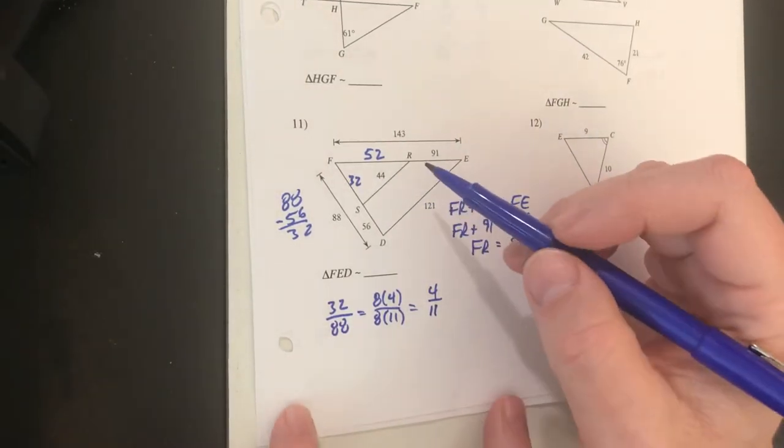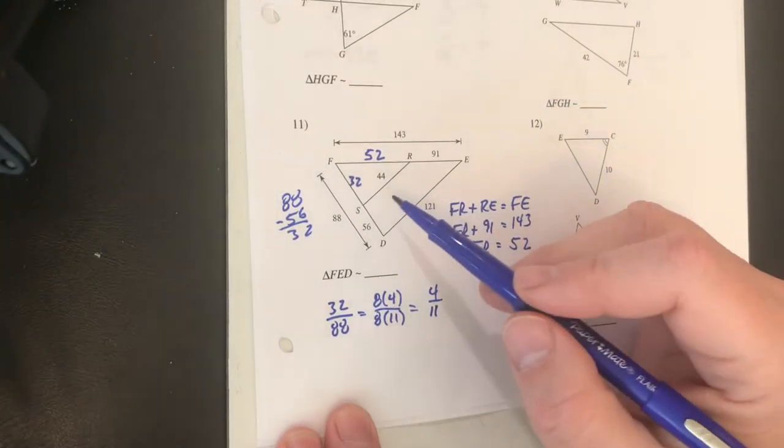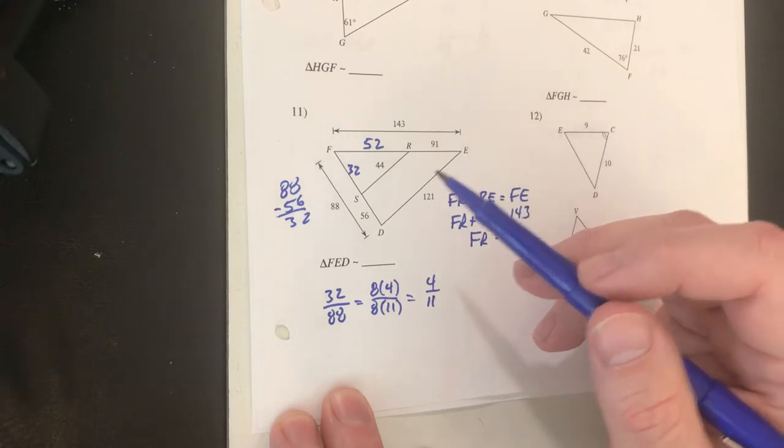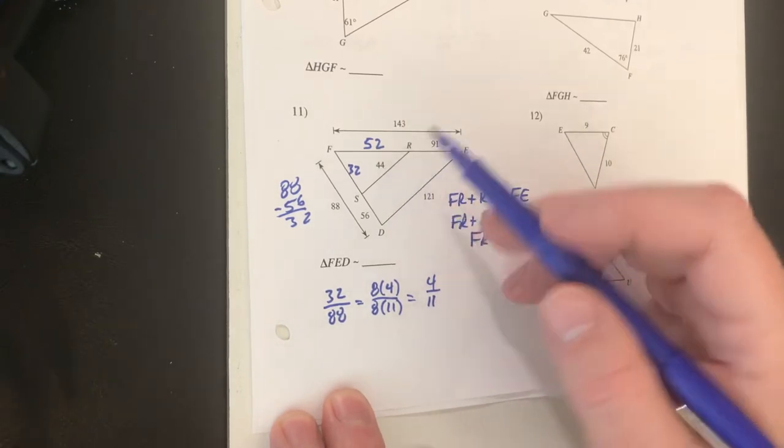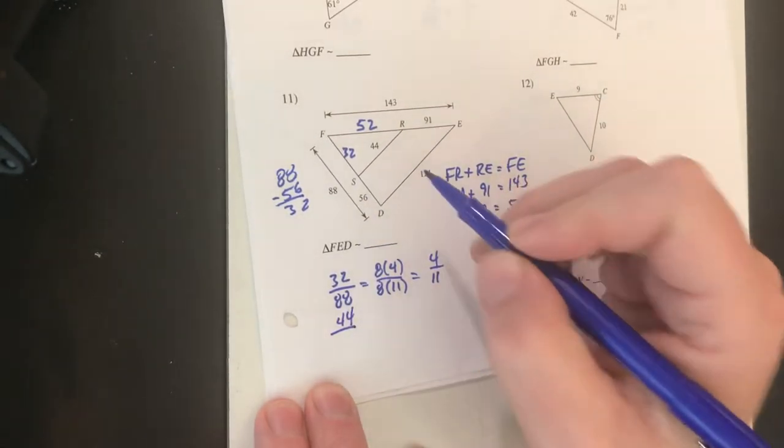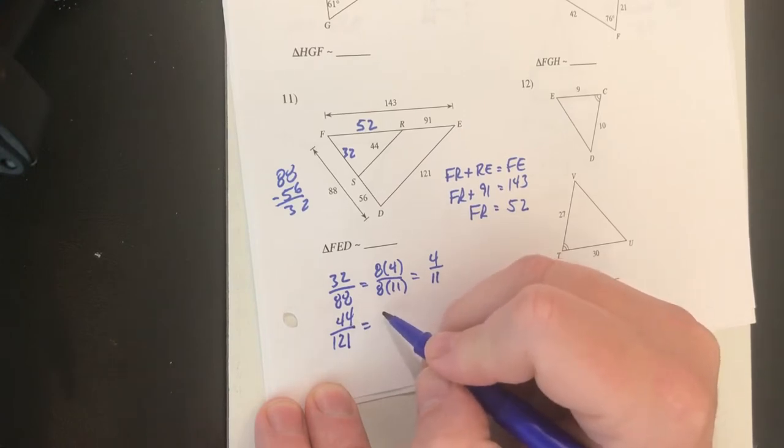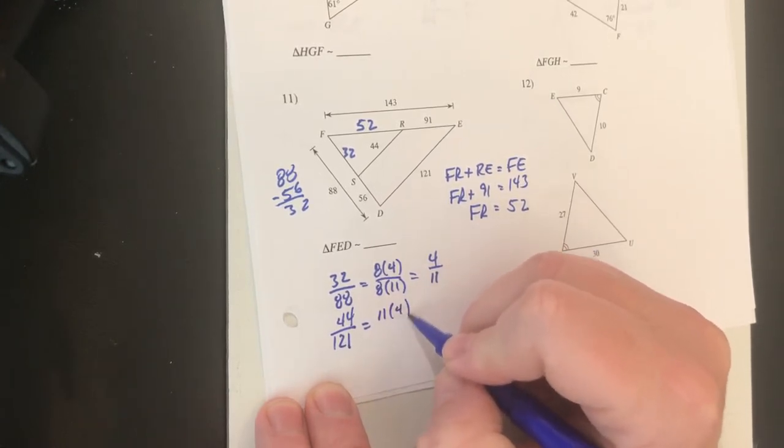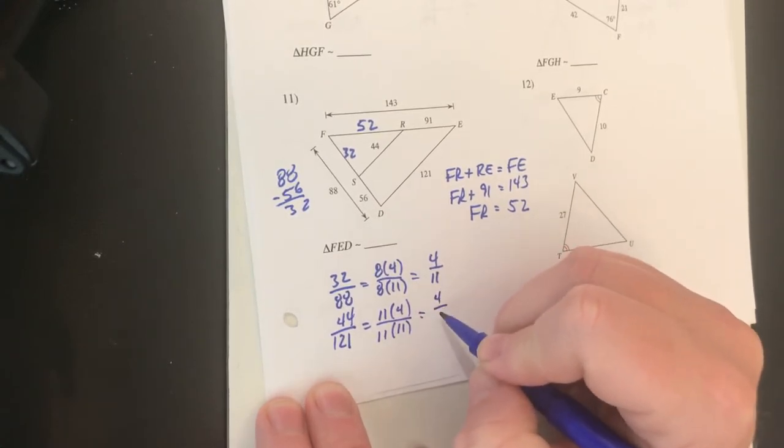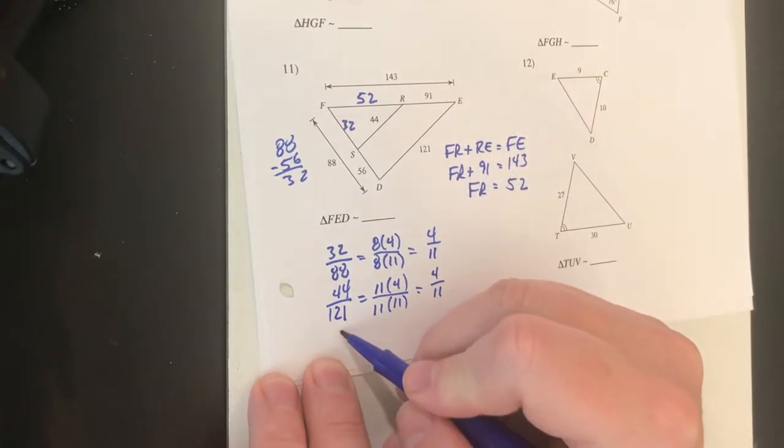So if these triangles are similar then the scale factor is going to be 4 out of 11 or 4 over 11 so the ratios of the other two sides should all reduce to 4 over 11 so now let's look at the two middle sides. 44 is the middle side length of FRS so I'll do 44 over 121 and I can factor out an 11 from 44 and an 11 from 121 and I get 4 over 11.